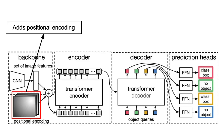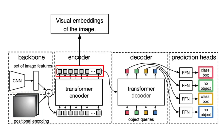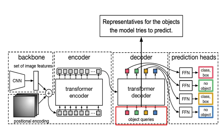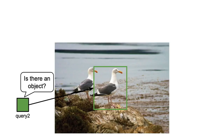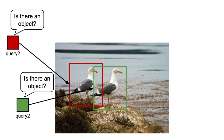After those two steps in the backbone, we pass the features through all the layers of the encoder, resulting in some kind of embedding representation that contains meaningful information about the visual content in the image. Those embeddings are then used by the decoder to detect the corresponding objects in the image. To achieve that, the decoder uses some special learnable embeddings called object queries, which act as representatives for the objects DETR will predict.